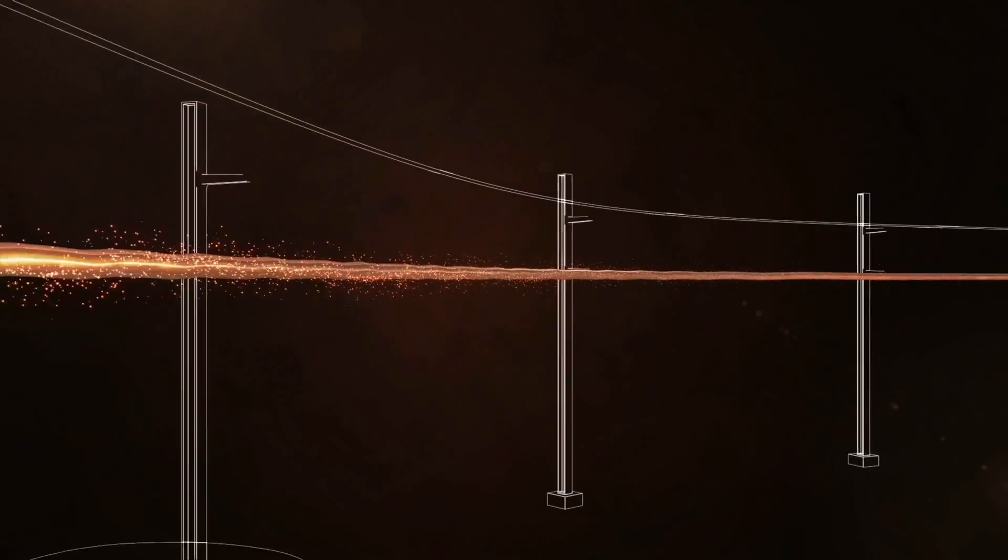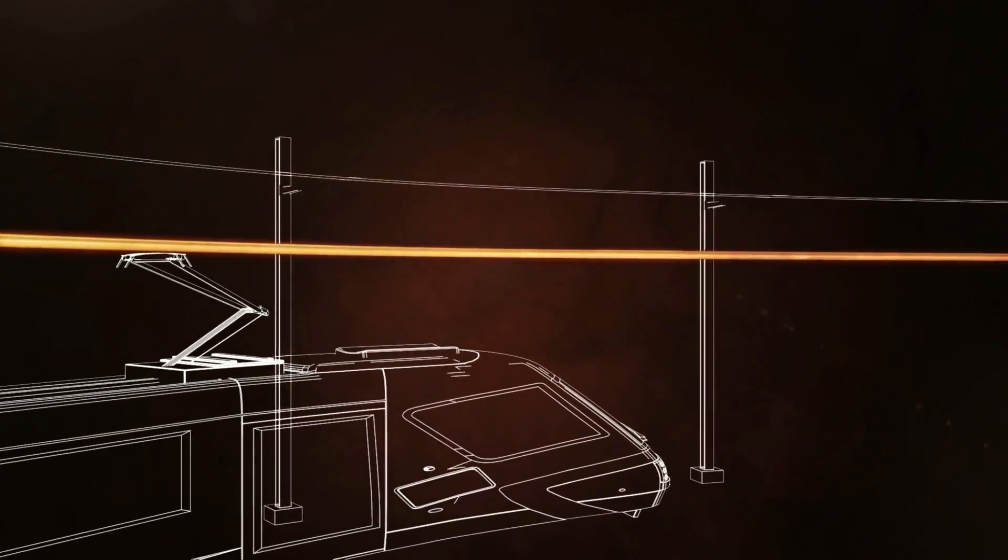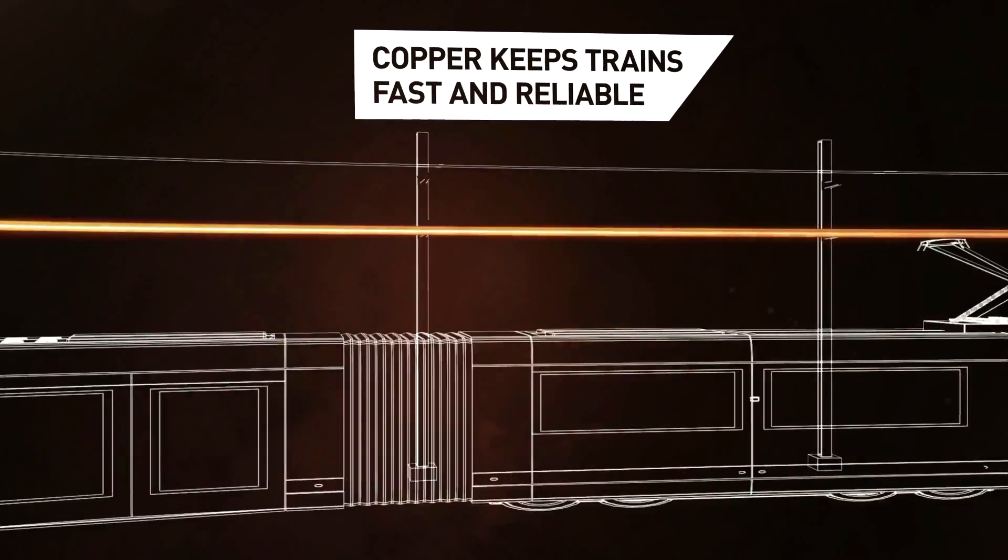A high-tension alloy reduces the bounce and wear in the overhead lines that power today's high-speed trains, so trains can go faster with lower maintenance and greater reliability.